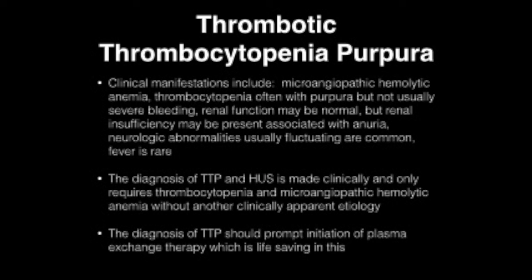Clinical manifestations include microangiopathic hemolytic anemia, thrombocytopenia often with purpura but not usually severe bleeding. Renal function may be normal, but renal insufficiency may be present, especially with oliguria. Neurological abnormalities are common and usually fluctuating. Fever is rare. The diagnosis of TTP and HUS is made clinically and only requires thrombocytopenia and microangiopathic hemolytic anemia without another apparent etiology. Diagnosis of TTP should prompt initiation of plasma exchange therapy, which is life-saving.